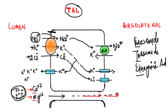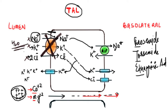This is the normal physiology in the thick ascending limb of the loop of Henle. When we give loop diuretics like Furosemide, Torsemide, and Ethacrynic Acid, they block this cotransporter pump. As a result of this blockade, there will be no reabsorption of sodium, potassium, and chloride ions — they remain in the lumen and are excreted out. When these ions are excreted, water follows, so water is also not reabsorbed, resulting in diuresis.